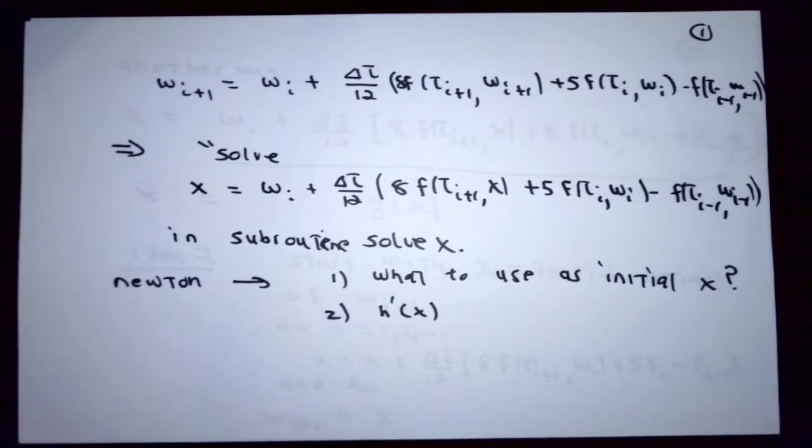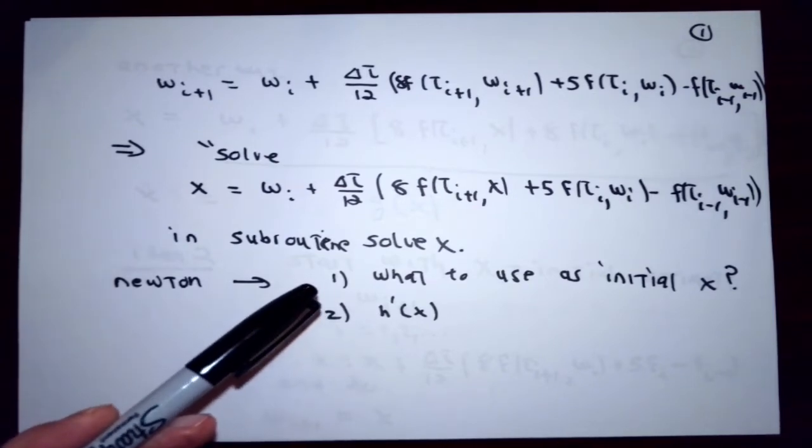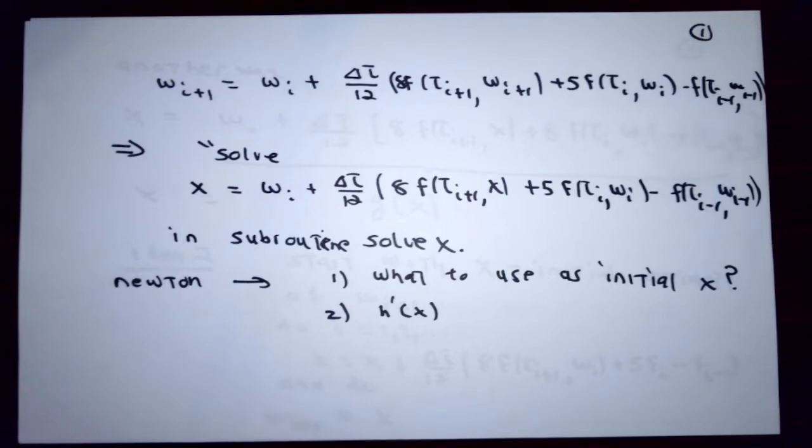There are two disadvantages to Newton's method. Firstly, I have to decide what to use as initial value for x, that is to say an initial estimate for w_{i+1}. We had several choices. One choice would just be to use w_i. We saw that wasn't very good, though.